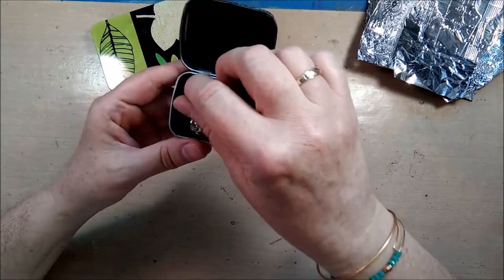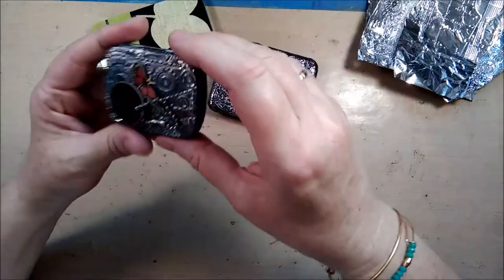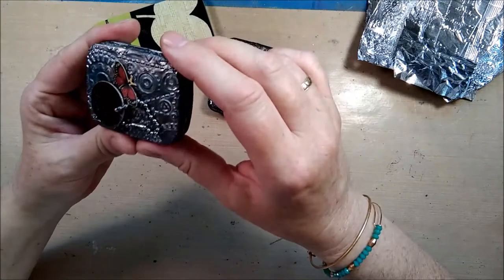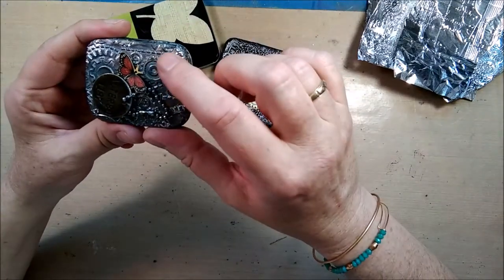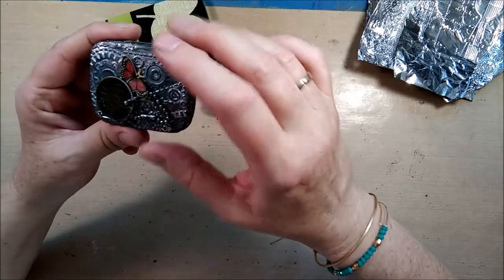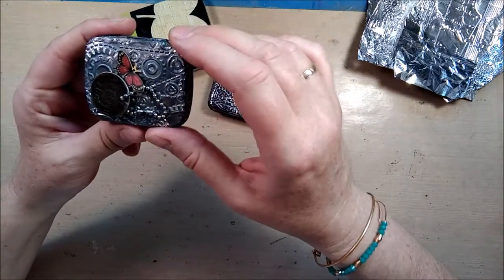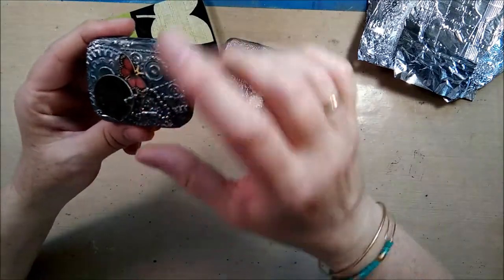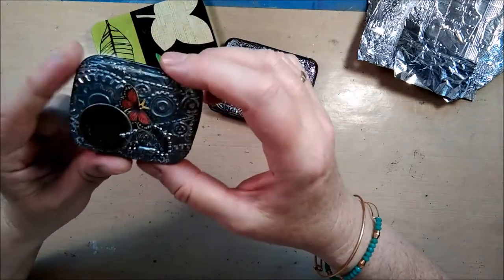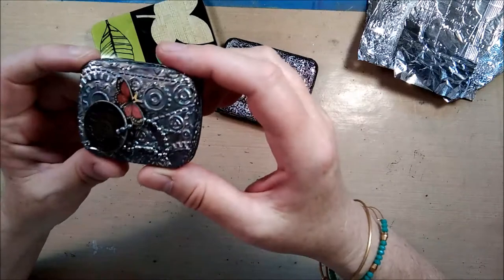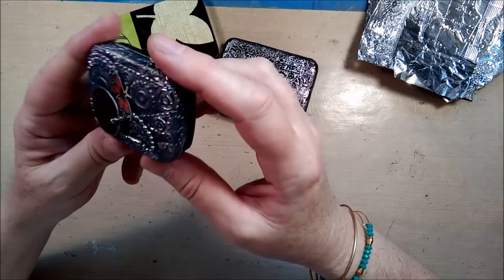On the outside she used embossed kitchen foil. It's a gear design, and I actually used the same design in one of my recent videos. She also added a couple of embellishments, distressed it, and I think the idea of using this foil is just so cool. I think the effect is really nice.